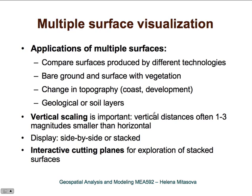This is particularly useful for using visualization for data analysis. For example, you can compare surfaces produced by different technologies — such as how a digital elevation model acquired by LIDAR and SRTM differ from each other. You can also compare bare ground and surface with vegetation to see the vertical structure of vegetation, analyze change in topography on the coast where we have migrating dunes, or display different surfaces such as different soil horizons or geological layers.